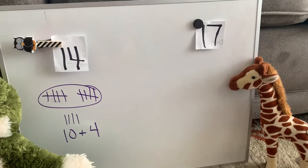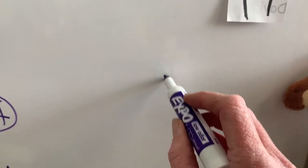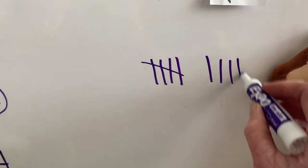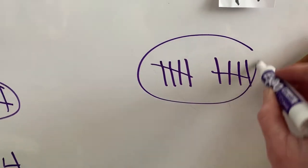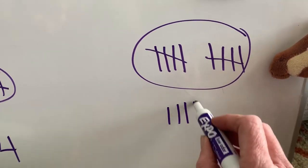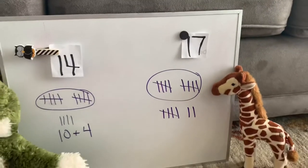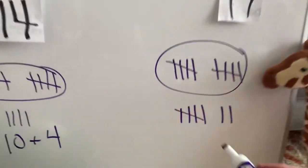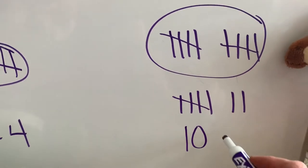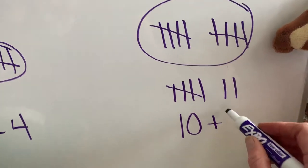What number is that? Seventeen. Here we go. One, two, three, four, five, six, seven, eight, nine, ten, eleven, twelve, thirteen, fourteen, fifteen, sixteen, seventeen. Seventeen is ten plus what? Seven.